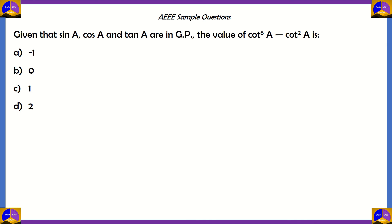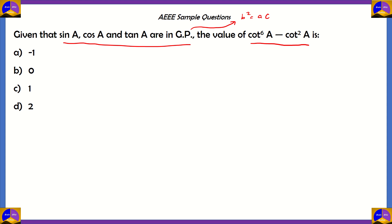Now let's look at another question. Given that sinA, cosA, and tanA are in a geometric progression, find the value of cot⁶A minus cot²A. Is it -1, 0, 1, or 2? Since sinA, cosA, and tanA are in GP, we're going to use the formula for the geometric mean: b² = ac. This is the property of a geometric progression — the square of the middle term equals the product of the first and third terms.